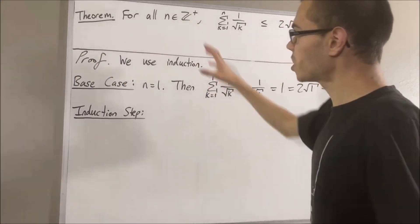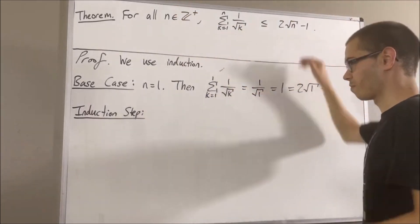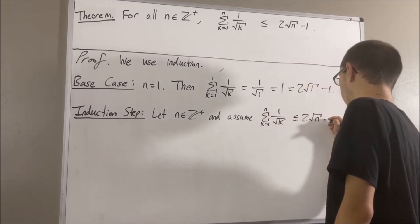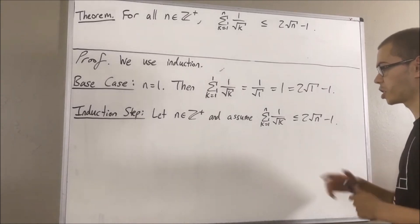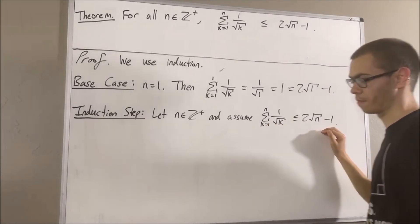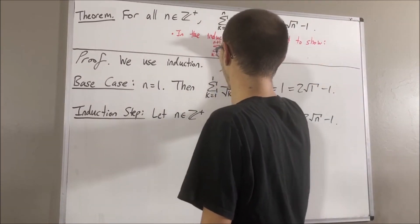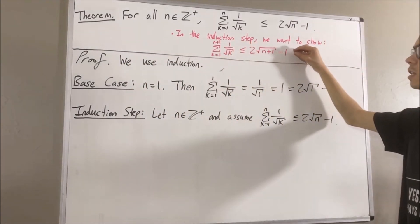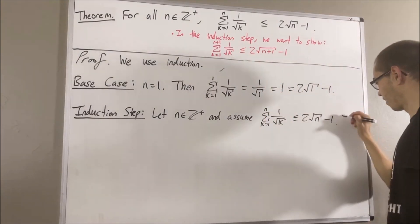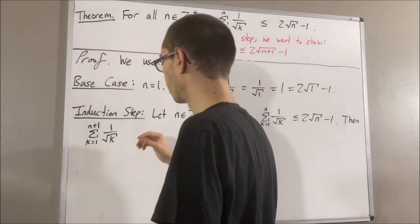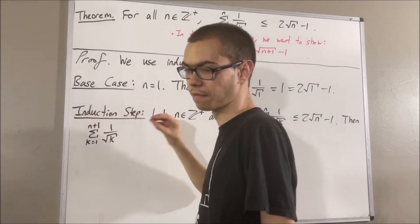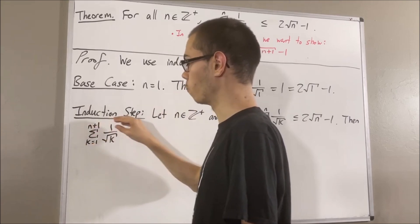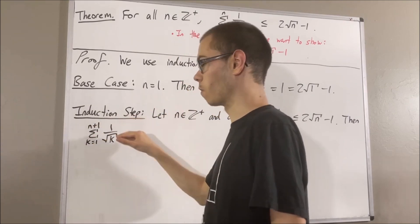Now let's move on to the induction step. In the induction step, we give ourselves an arbitrary positive integer n for which this is true. The goal is to show that this is also true for n plus 1. Let's start by writing the left-hand side and pulling away the (n+1)th term of the sum. So we rewrite this as the sum from k equals 1 to n of 1 over the square root of k, plus 1 over the square root of n plus 1.